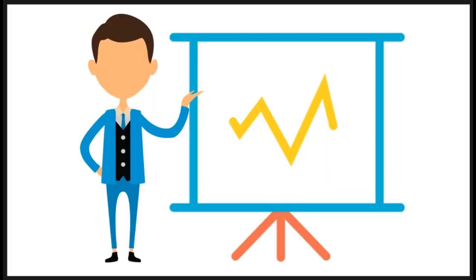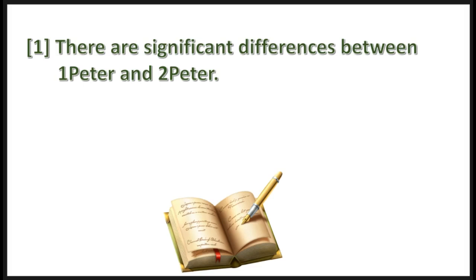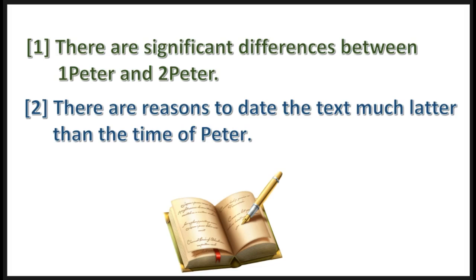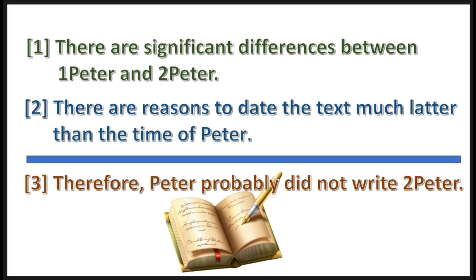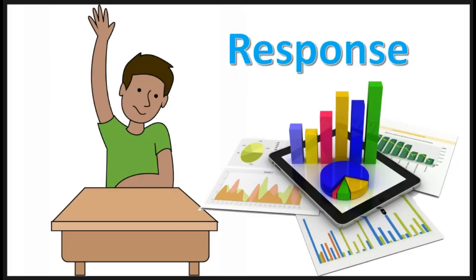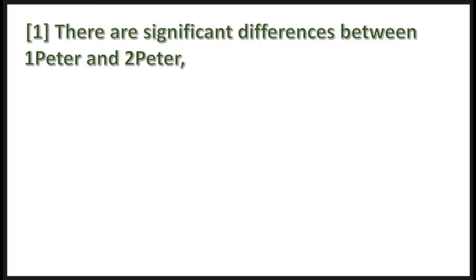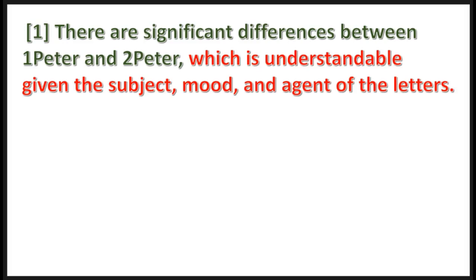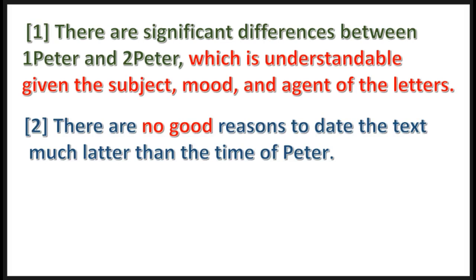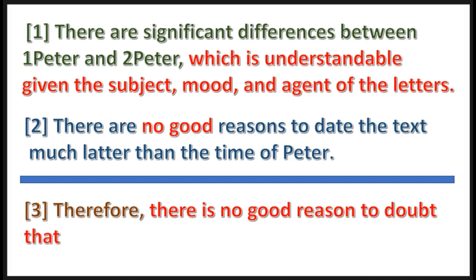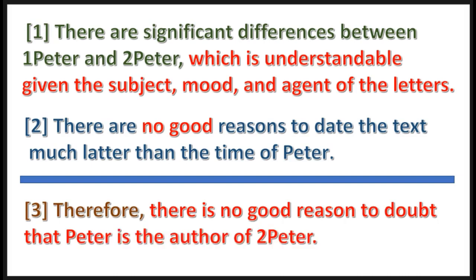Their main argument is this: 1. There are significant differences between 1 Peter and 2 Peter. 2. There are reasons to date the text much later than the time of Peter. Therefore, Peter probably did not write 2 Peter. The simple response is: 1. There are significant differences between 1 and 2 Peter, which is understandable given the subject, mood, and agent of the letters. 2. There is no good reason to date the text later than the time of the Apostle Peter. Therefore, there is no good reason to doubt that Peter is the author of 2 Peter.